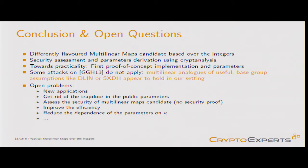There are a bunch of open problems: we need new applications, we need to get rid of the trapdoor in the public parameters, we need to assess the security since we have no security proof, and we need to improve efficiency and reduce the parameter dependence on the level.